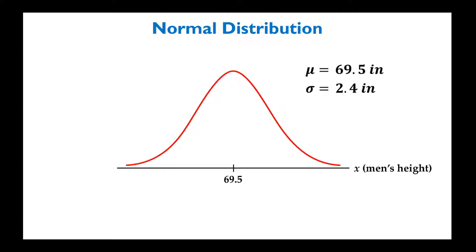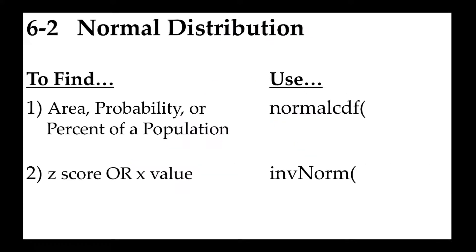Before we look at examples, I want to remind you of the two functions on the TI-84 or TI-83 calculator we've been using for normal distributions. Normal CDF is used to find an area under the curve — a probability or a percentage of a population. Inverse norm is used to calculate a Z-score or an X-value, where X can stand for height, weight, IQ scores, or similar values.